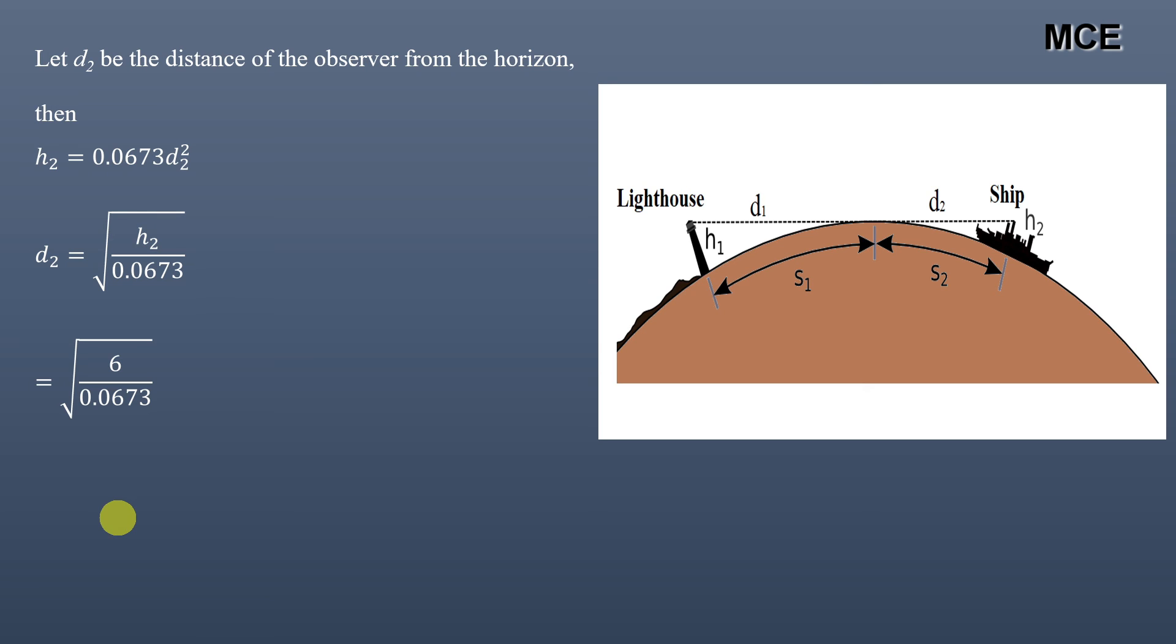Putting the value of h2 which is 6 meters, d2 = √(6 / 0.0673) = 9.44 kilometers. This is the value of distance of the observer from the horizon.